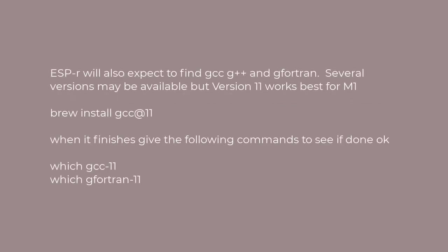ESPR will expect to find compiler libraries for GCC, G++, and Gfortran. There are often several versions available via brew, but version 11 is the one that works best for ESPR. Give the brew install command, and then when that finishes, check that it's been installed by giving the which commands.